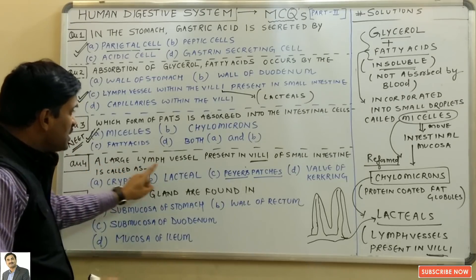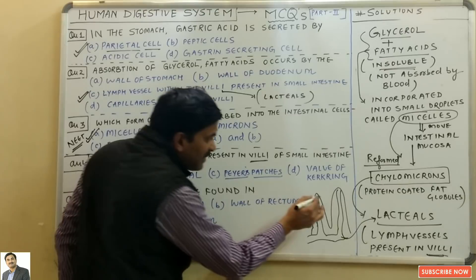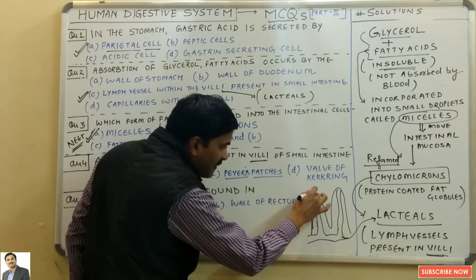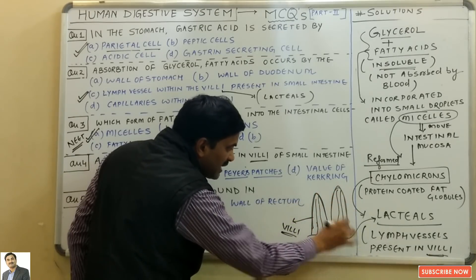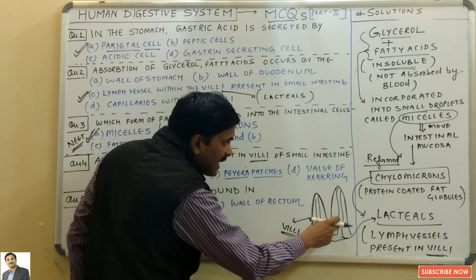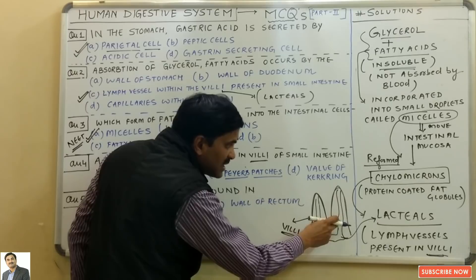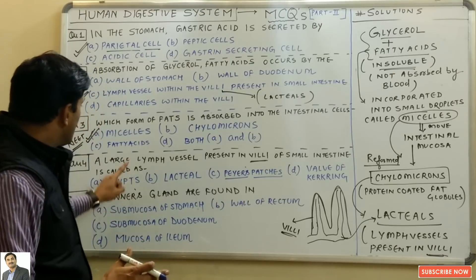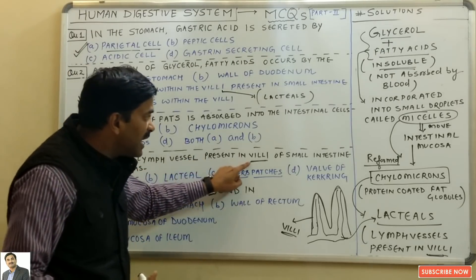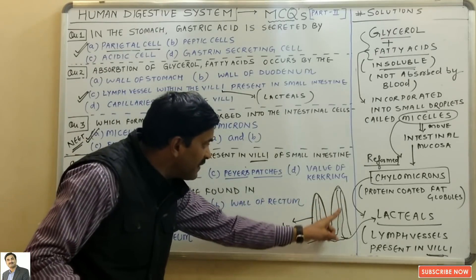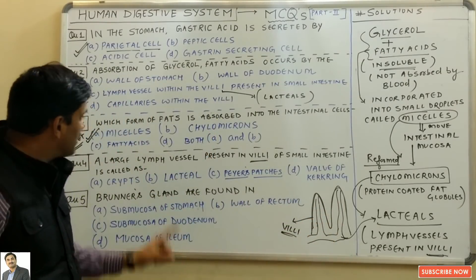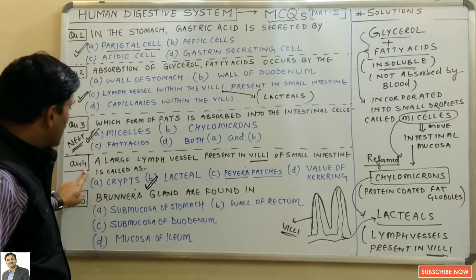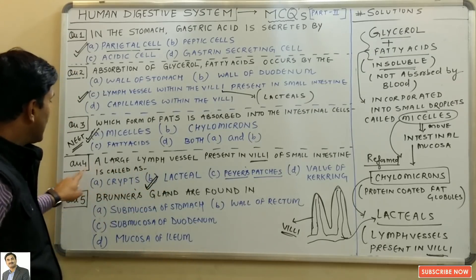Question four: a large lymph vessel present in the villi of the small intestine is called? The villi are finger-like projections in the small intestine, and the lymph vessels present within them are called lacteals, which absorb fats. So the answer to question four is B — lacteals.